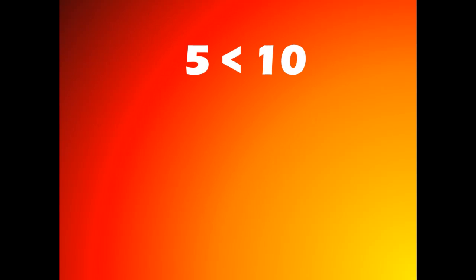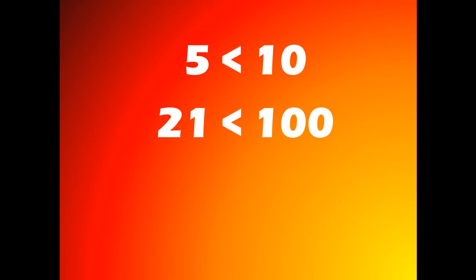This operator is the less than operator and is the opposite of the greater than operator. This shows that the value on the left is less than the value on the right. It is used like this: 5 is less than 10, 21 is less than 100, and 1 is less than 3.